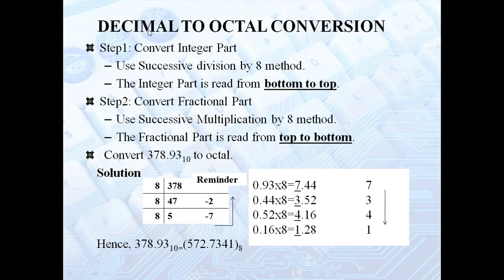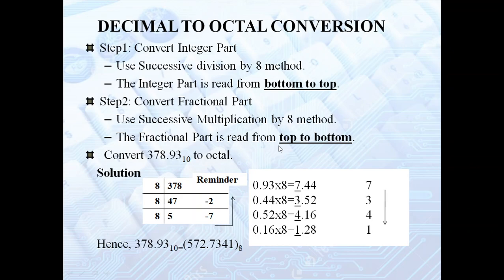Let us see how to convert decimal to octal. There are two parts: before the decimal point is the integer part, and after is the fractional part. To convert the integer part, use successive division by 8 and read the result from bottom to top. If there is a fractional part, convert it using successive multiplication by 8 and read the result from top to bottom.